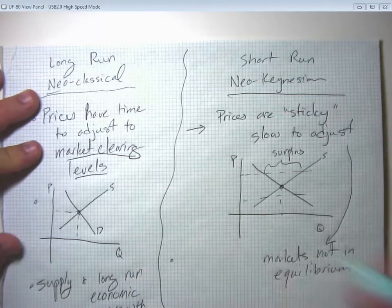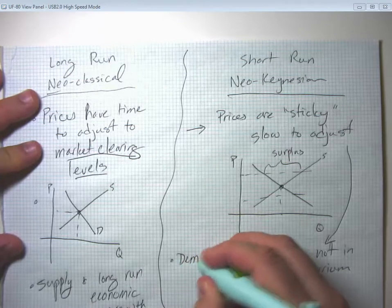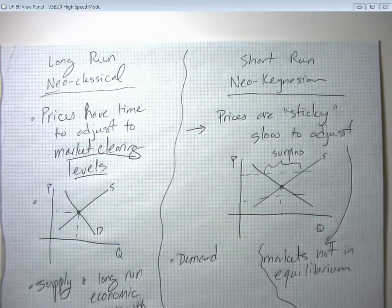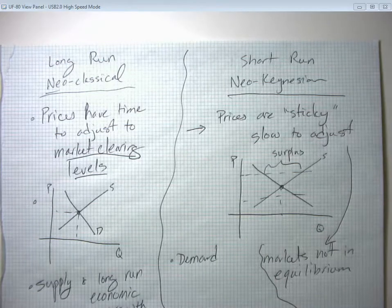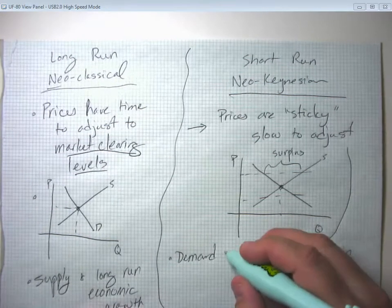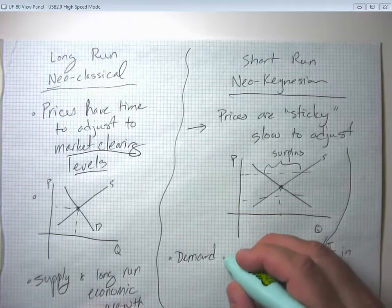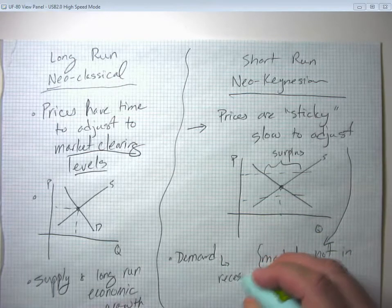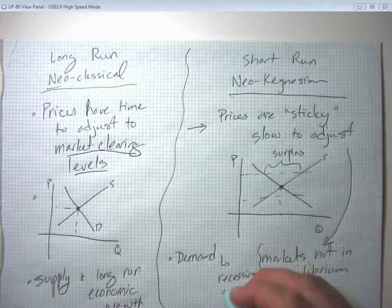And the neo-Keynesian analysis tends to be more focused on demand side issues. How much the economy produces isn't limited in an important way by the supply, but is in fact mostly a function of how much we want to demand. And in this case, we're mainly going to be worrying about recessions and booms.